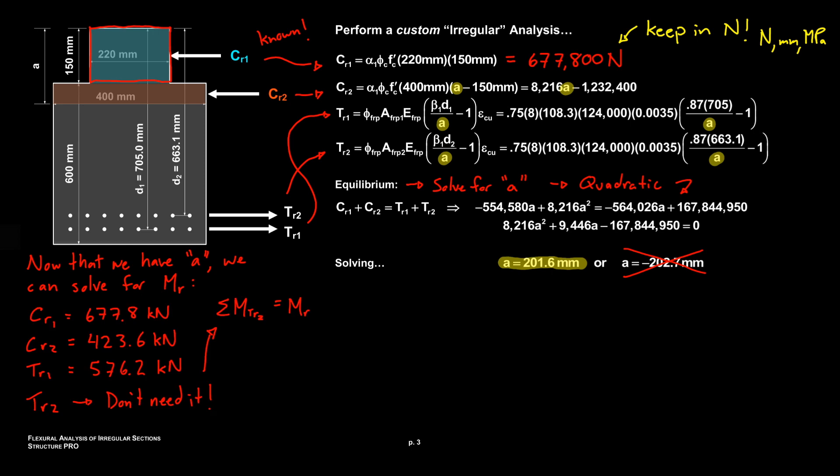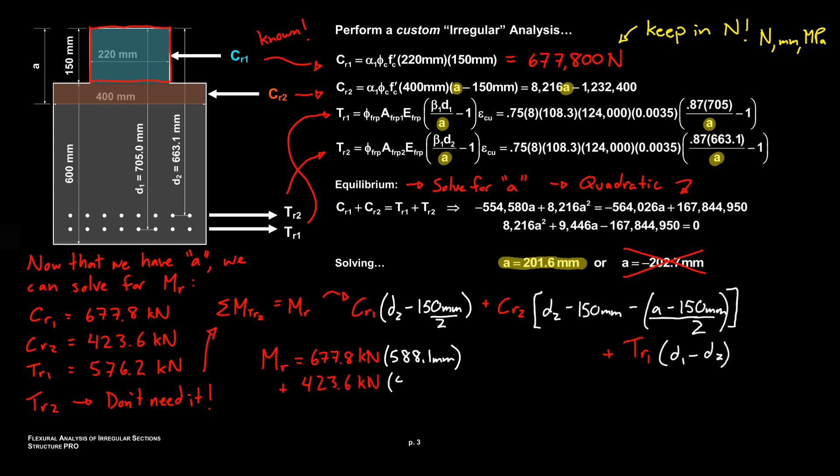We don't need to solve for TR2 though because we can just sum moments about TR2. So multiplying all these resultants by their moment arms about TR2 will give us MR and I've written that out there with the moment arms in white. Alright, so all that's left is just to plug all these values in because we solved for them and find our MR and check if it's greater than or less than MF. Basically, is the section adequate?